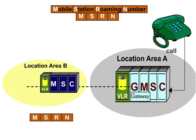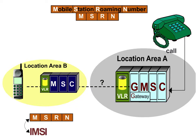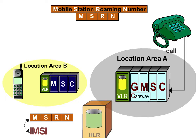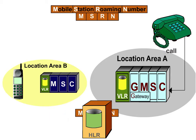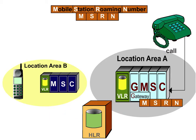In order for a called subscriber to be identifiable, the MSRN is linked to the International Mobile Subscriber Identity, IMSI. In the event of an incoming call, the MSRN is transmitted via the HLR to the Gateway MSC, GMSC, to inform it where the call has finally to be routed.